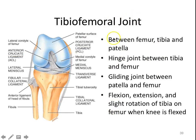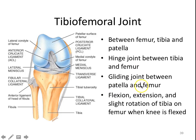We have the tibiofemoral joint — between the femur and the tibia. The patella sits in the front, protecting all these structures that would otherwise be exposed when we flex our leg. It's a hinge joint. There's also a gliding joint between the patella and the femur — the patella simply glides along the anterior surface of the femur.